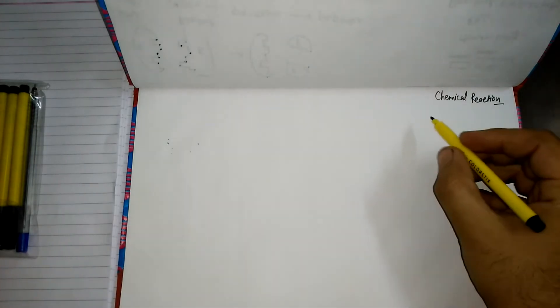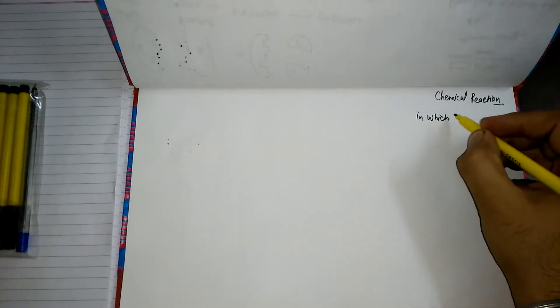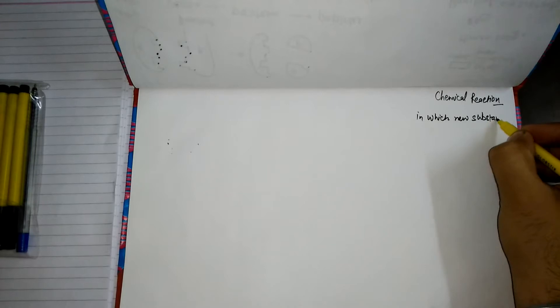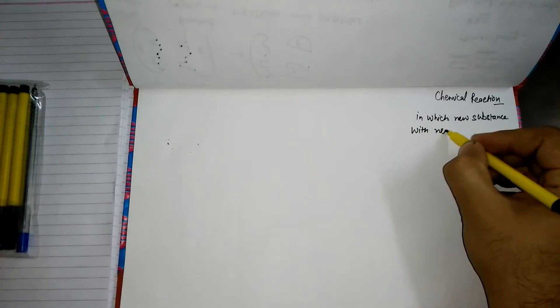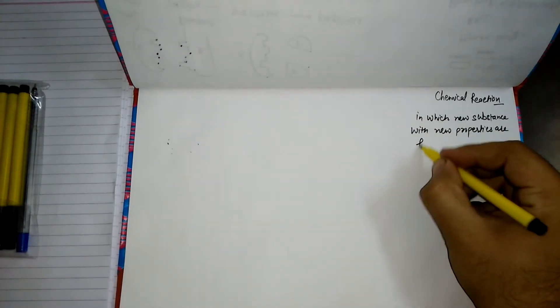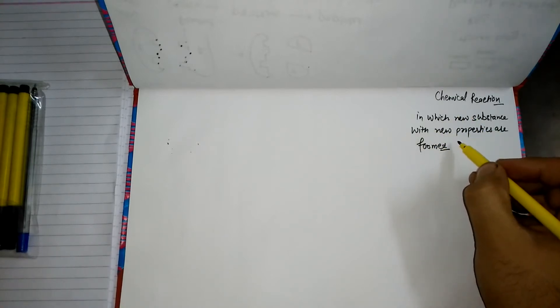Hello friends, welcome to our channel Google Galaxy. Today we are going to discuss the chapter on chemical reactions. A chemical reaction is basically a process in which new substances with new properties are formed.